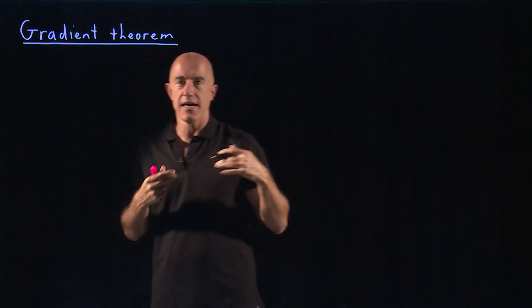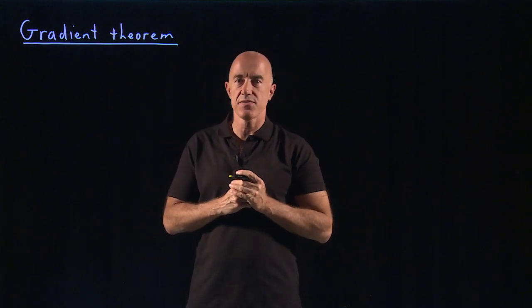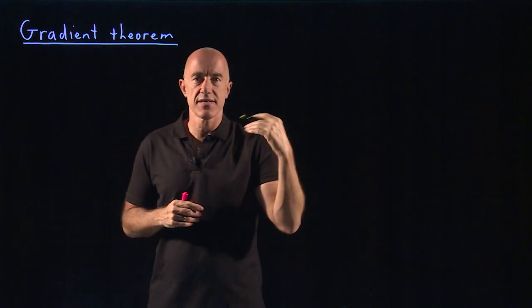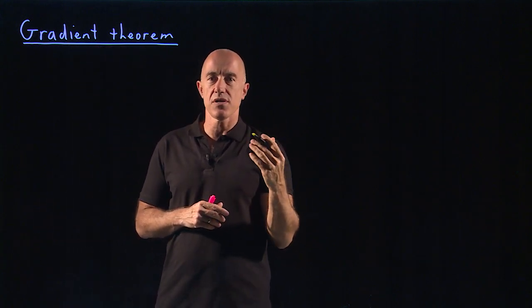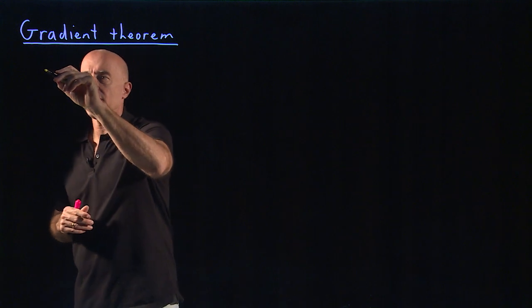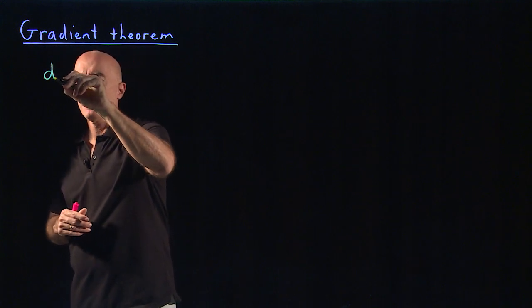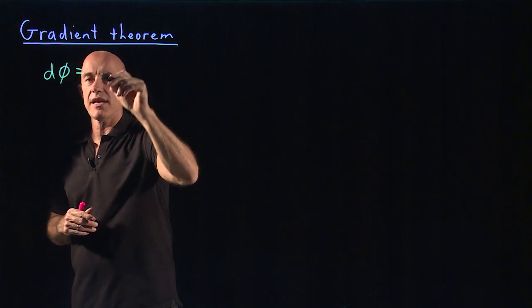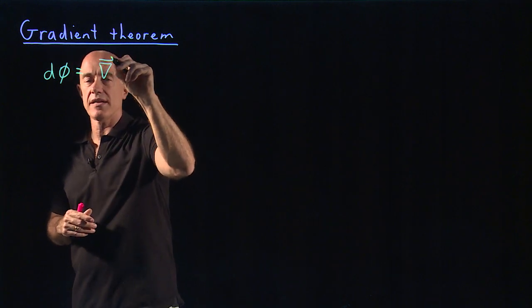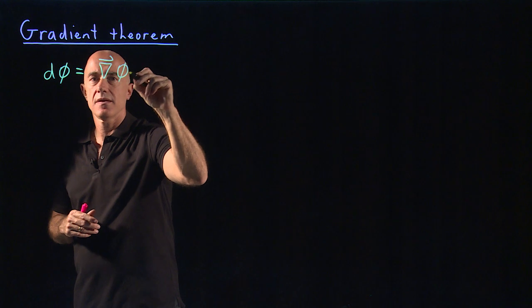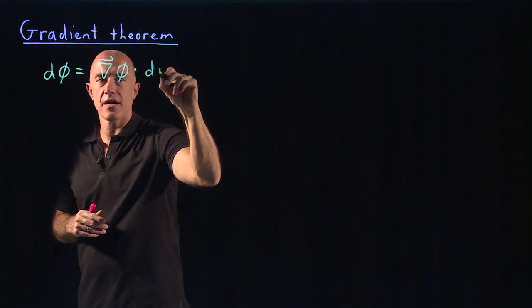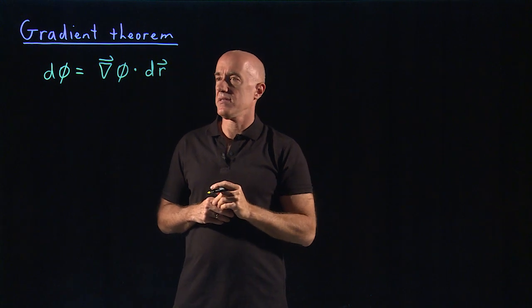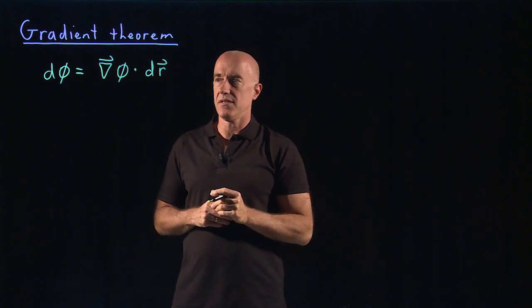So let me see if I can convince you how this works. If we have a scalar field, I'll call it here phi. If we take the differential of phi, we can use the gradient to do that — that's the gradient of phi dot dr. So the change in phi is the gradient of phi dot dr.